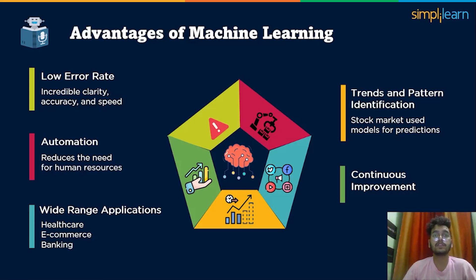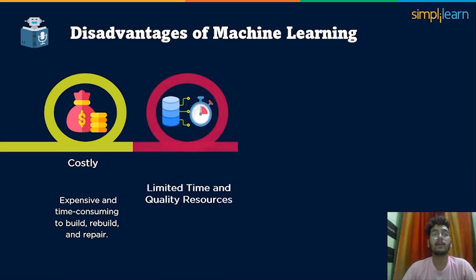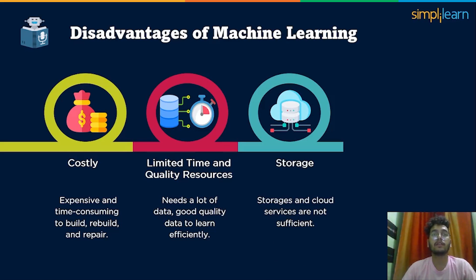As every coin has two sides, machine learning has advantages as well as disadvantages. The first disadvantage is that it is costly — machine learning models are expensive and time-consuming to build, rebuild, and repair. Robotic repair can reduce the time and manpower required to fix machine learning models, but again that is too pricey. The second disadvantage is limited time and quality resources — machine learning needs a lot of data, but it also needs good quality data to learn efficiently. The third one is storage — the backups and servers are continuously at work and responsible for recording the acquired information.